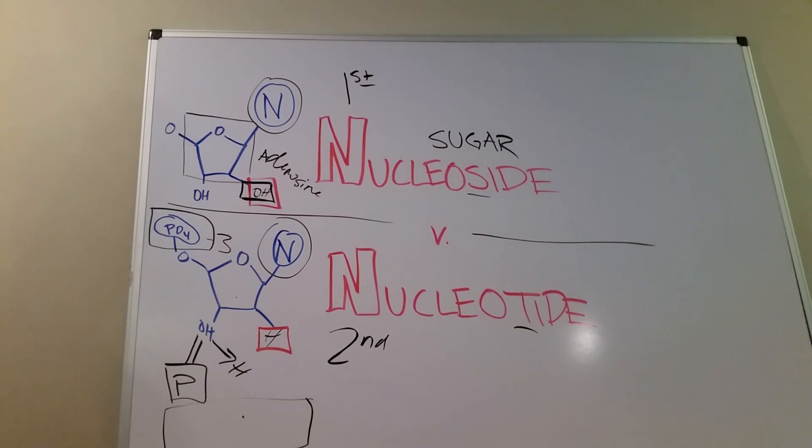So not only is adenine or nucleotides or nucleosides important just for DNA, it's also important for all sorts of metabolic processes in our bodies, namely ATP, ADP. Thank you.